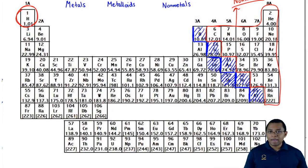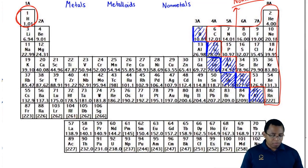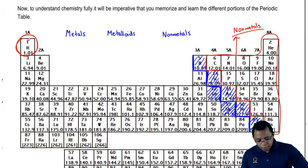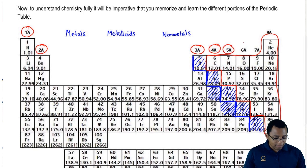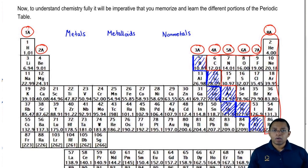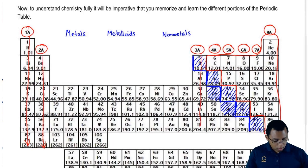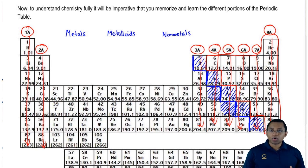Now that we know the three types of elements in the periodic table, it becomes important to be able to name the groups. What exactly is a group? Groups go vertical. Looking at the periodic table, we have 1a, 2a, 3a, 4a, 5a, 6a, 7a, and 8a. These are called your main groups, and there are eight of them. These are also called our representative elements or main group elements.